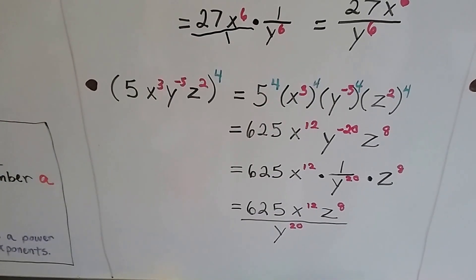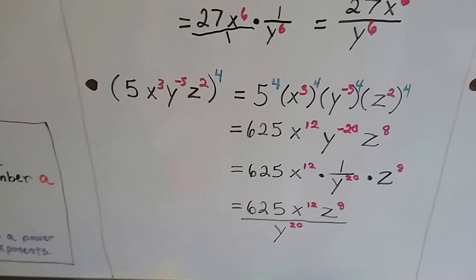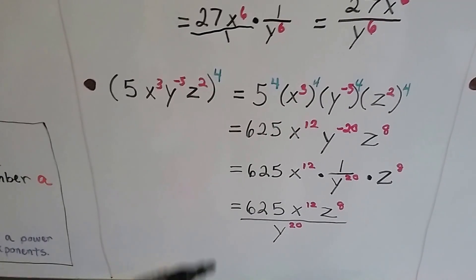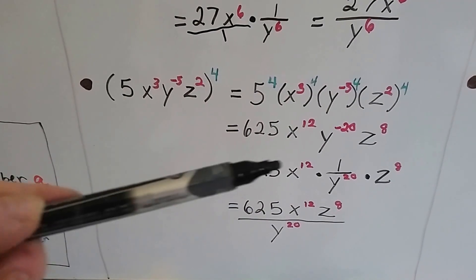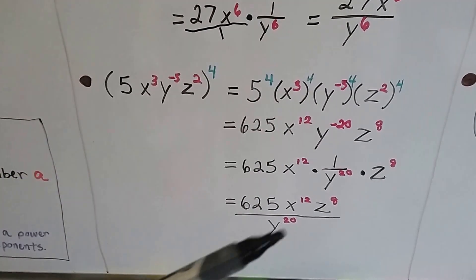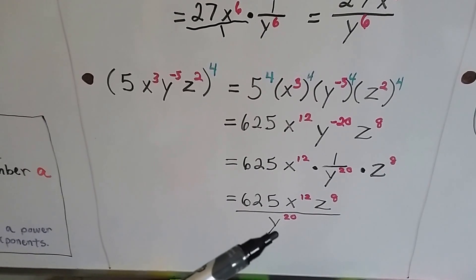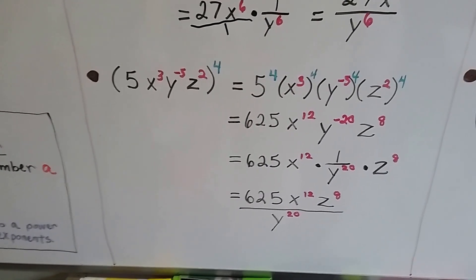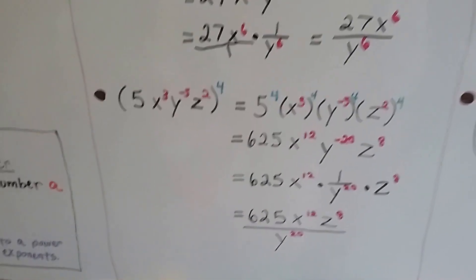Just like we did here. Because we're multiplying all of these numerators by this 1, and then the y is down below as the denominator.